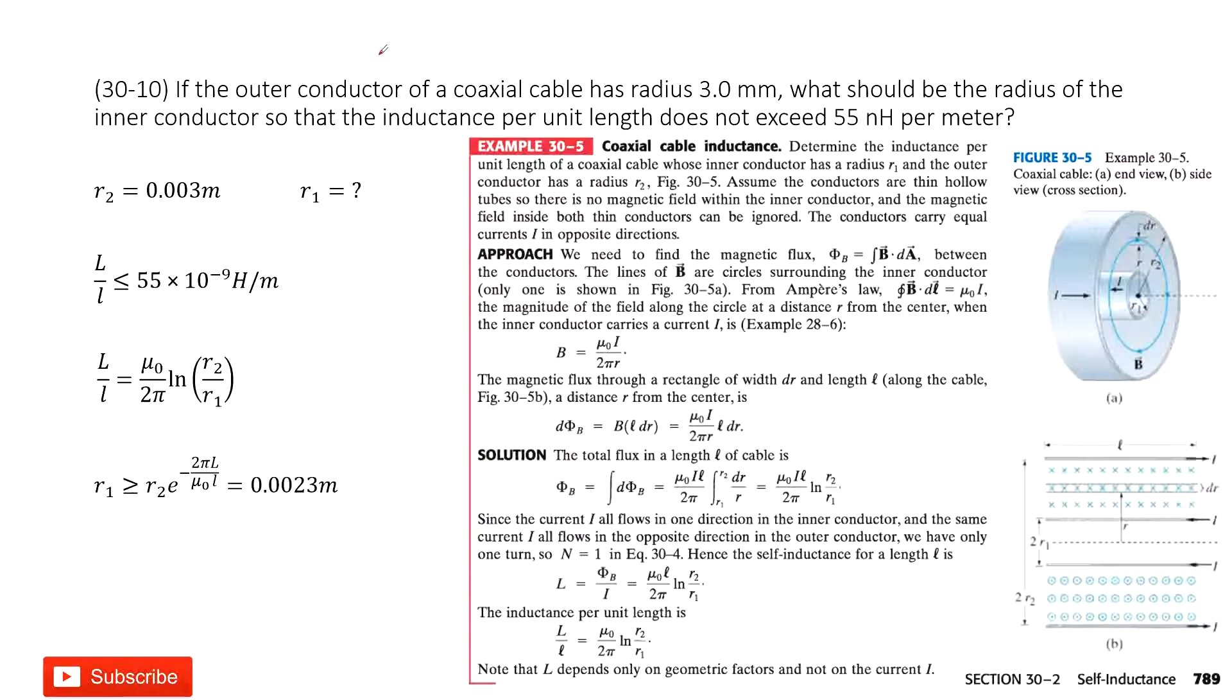So we look at the problem together. We have an outer conductor with radius given, we write it as R2. And then we need to know the inner radius, so we write it as R1.